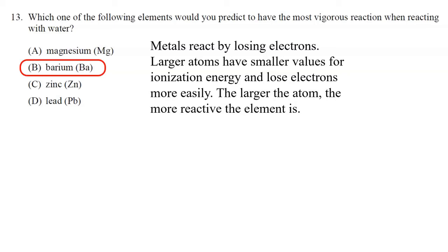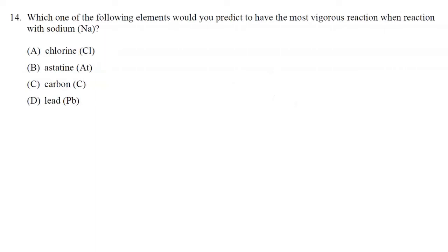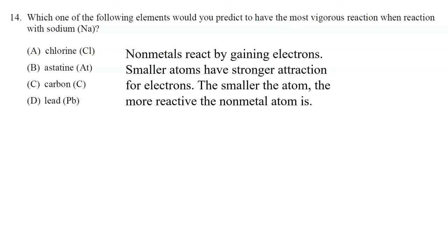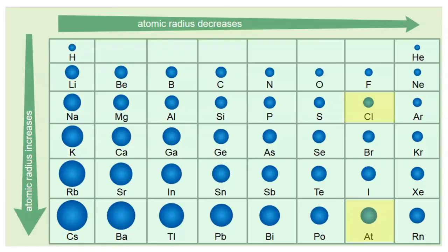Number fourteen: which element would have the most vigorous reaction when reacting with sodium? Since sodium is a metal, we're looking for a reaction with a nonmetal. The choices include chlorine, astatine, carbon, and lead. We can rule out lead as a metal, leaving chlorine, astatine, and carbon — all nonmetals. Nonmetals react by gaining electrons; the smaller the atom, the stronger the attraction for electrons, so we want the smallest atom. Since atomic radius decreases left to right and increases top to bottom, we look for an element in the upper-right corner of the periodic table. The correct answer is chlorine.